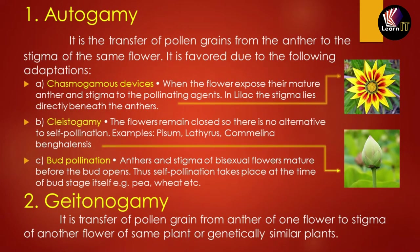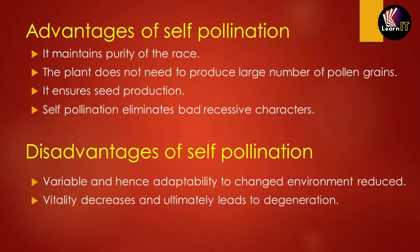The second type of self-pollination is geitonogamy, which is the transfer of pollen grains from the anther of one flower to the stigma of another flower of the same plant or a genetically similar plant. It can transfer from one flower to another on the same plant or to a genetically similar plant.